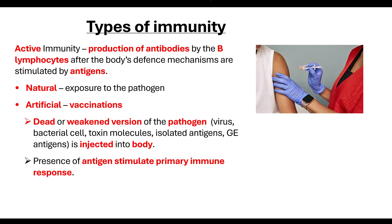So if we are exposed again to the actual pathogen, we have those memory cells and therefore have a faster immune response against them. You can either have passive immunity — where you are provided with the antibodies and do not produce them yourself — or active immunity, where you are producing those antibodies through the body.